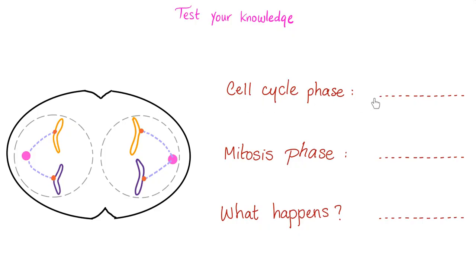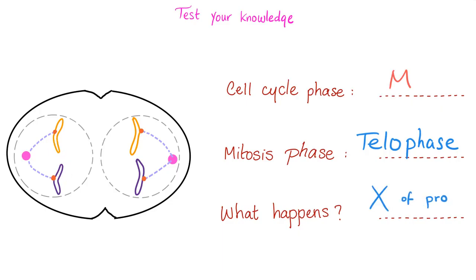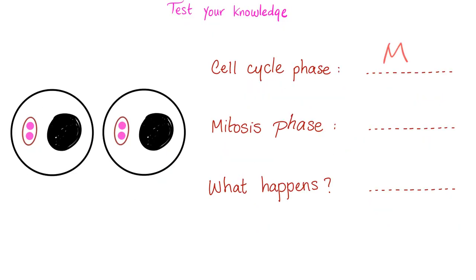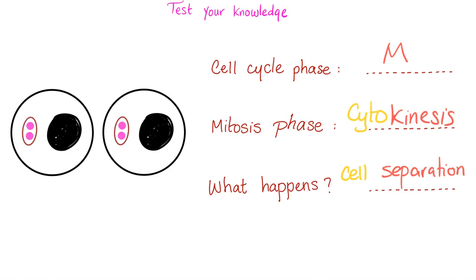Cell cycle phase — M phase, mitosis. This is the end result: the telos, the purpose — this is telophase, the exact opposite of prophase. Disappearance of the mitotic spindle, formation of nuclear membrane, formation of cleavage furrows, uncoiling and relaxation and decondensation of chromosomes. Each of the two nuclei will contain a complete copy, 2N, of the genetic material. Then cytokinesis — just after telophase. Cell separation: separation of the cytoplasm and organelles into two identical, beautiful, new daughter cells.